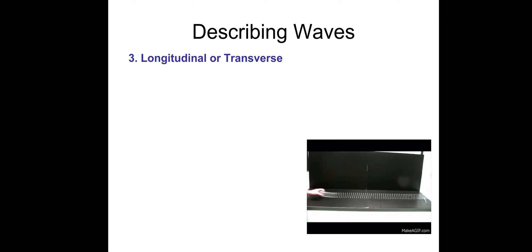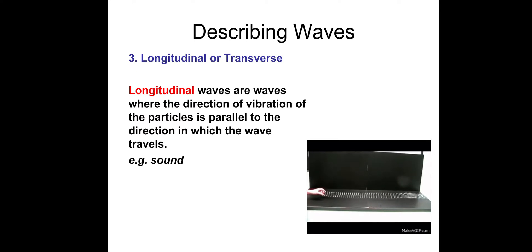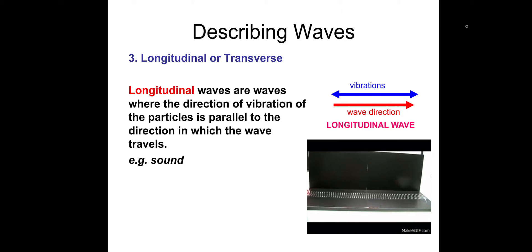Here's an example of a longitudinal wave. Longitudinal waves are waves where the direction of vibration of the particles is parallel to the direction in which the wave travels. So using a slinky, you push the slinky in the same direction as which the wave travels. The vibrations and the wave direction are in the same direction — they're parallel to each other. That's a longitudinal wave.